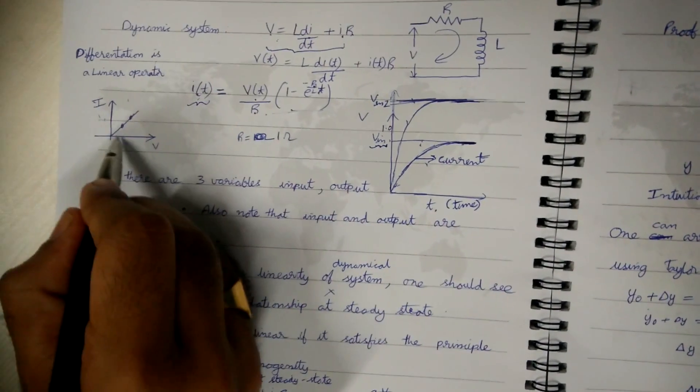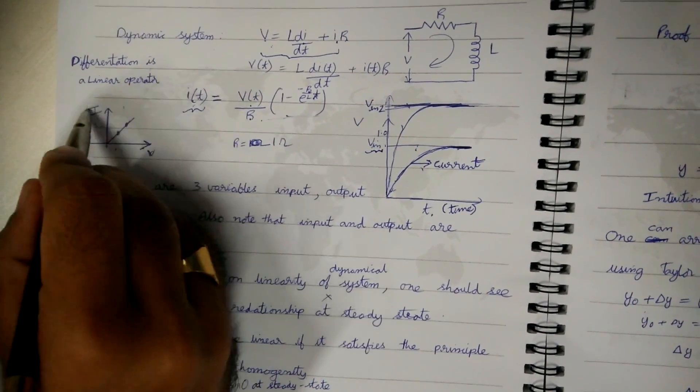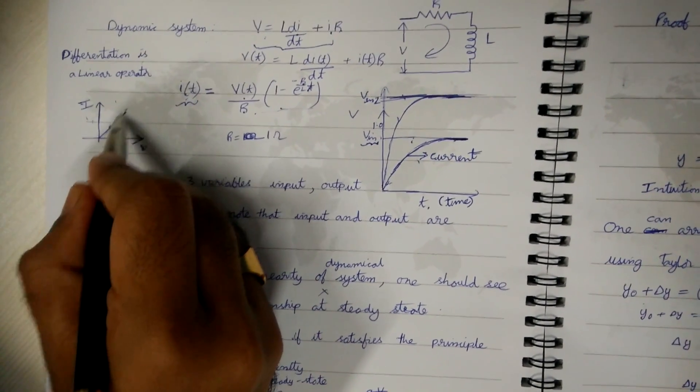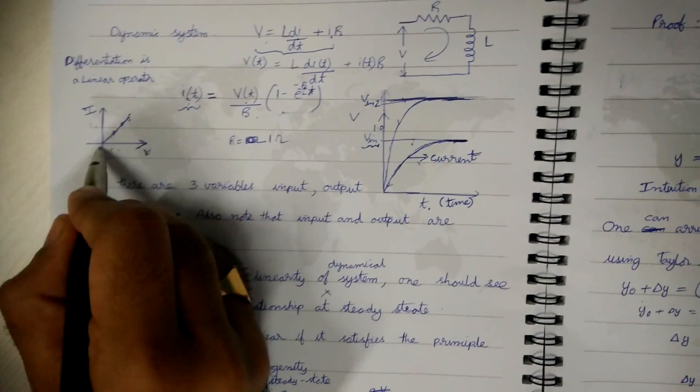So at steady state if you draw the relationship between voltage and current it will be a linear relationship, that is a straight line passing through origin.